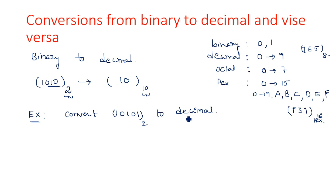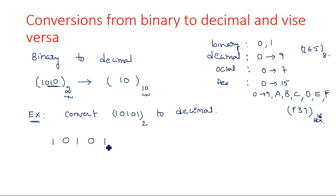Our question is: convert binary number 10101 into a decimal number. Remember, each digit of the binary number must be multiplied by its corresponding weight — 2 power 0, 2 power 1, 2 power 2, 2 power 3, 2 power 4, and so on. In our example 1 0 1 0 1, the weights are 2 power 4, 2 power 3, 2 power 2, 2 power 1, and 2 power 0.